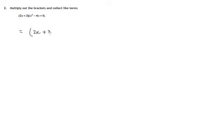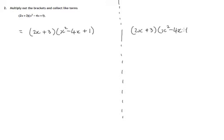So 2x plus 3, that's in the first bracket, and we multiply x squared minus 4x plus 1 by that. Now, the explanation is going to involve a little bit of color, so let's start with that and let's use green.